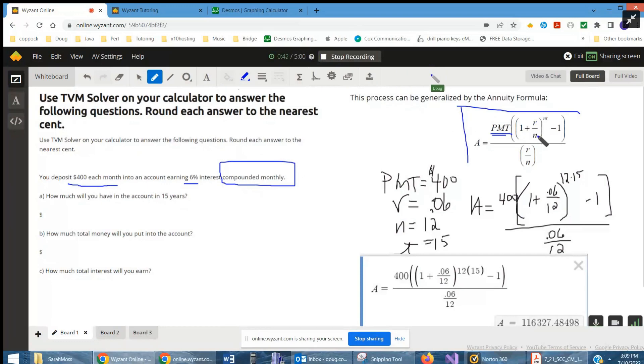N is the frequency of compounding. And if we plug in the numbers, there's the payment per month, 1 plus 0.06 divided by 12, and this is 12 times 15 here in the exponent.